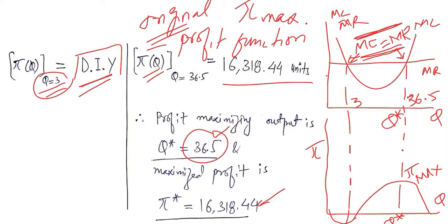In the profit function panel, at output 3 the profit is in the loss region — it is in the negative region. The profit function reaches its highest level, which is 16,318.44, at output 36.5, also represented as Q*. Using the mathematical tools from calculus — first order derivative and second order derivative — we have made sense of the profit maximization condition of a firm, supported by a two-panel diagram.